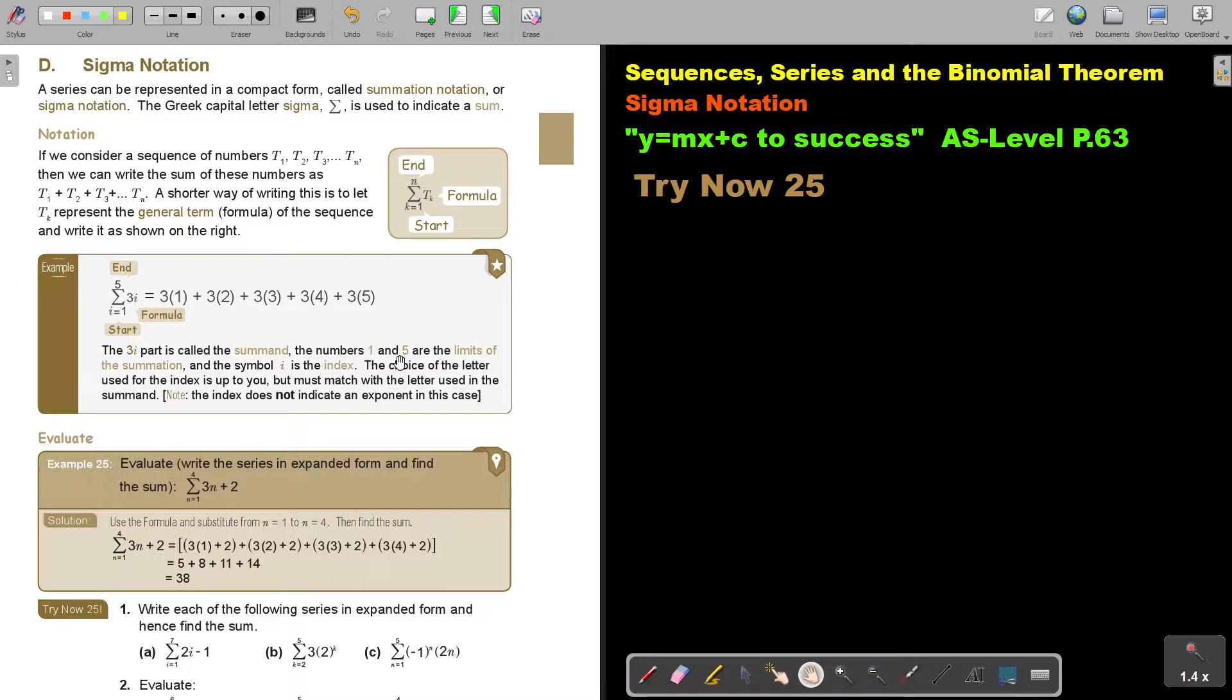The numbers 1 and 5 are the limits of the summation, and the symbol I is the index. The choice of the letter used for the index is up to you, but must match with the letter used in the sum. Now, the index does not indicate an exponent in this case.